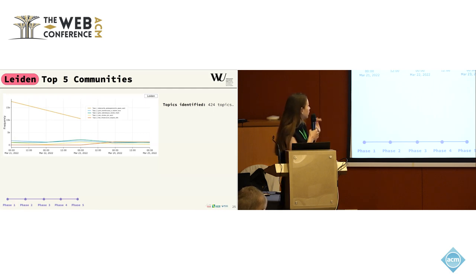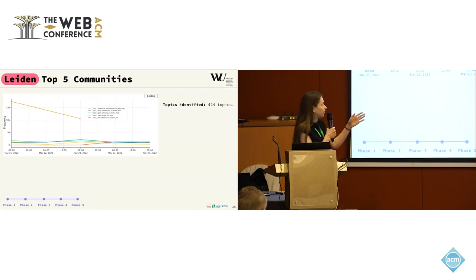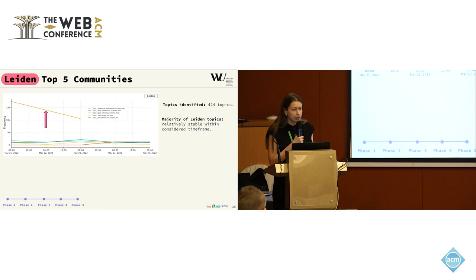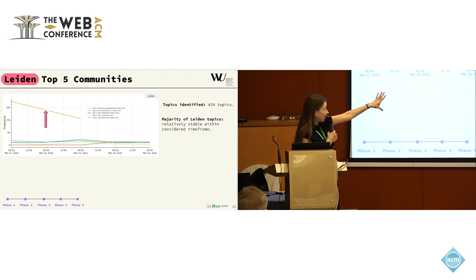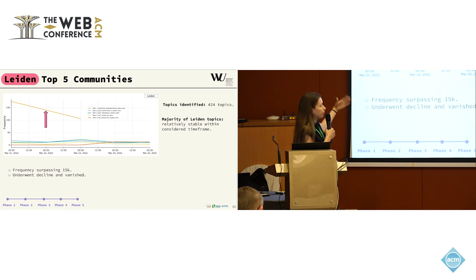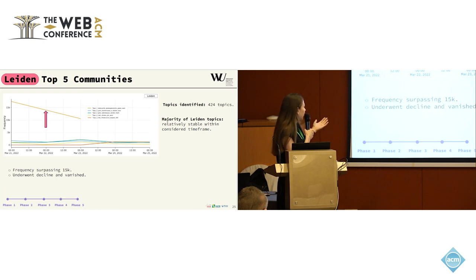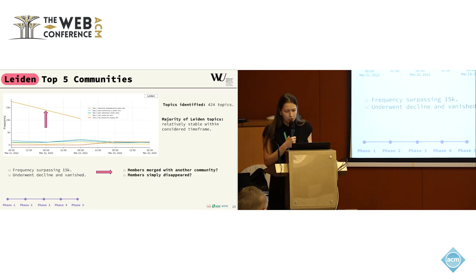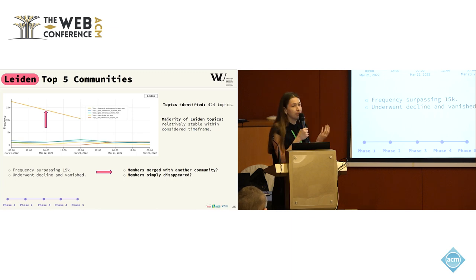Here are the topics detected for our top Leiden communities. In general, we detected 424 topics. The majority of topics is quite stable; however, there is one interesting outlier. This topic surpassed 15,000 mentions in frequency within the community, then underwent a decline and suddenly vanished. We started to wonder whether the members merged with another community or simply disappeared.